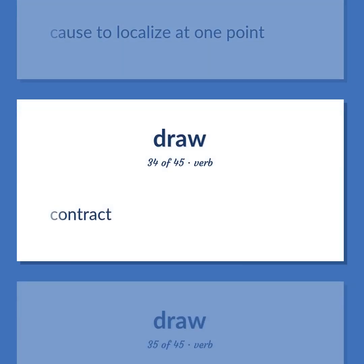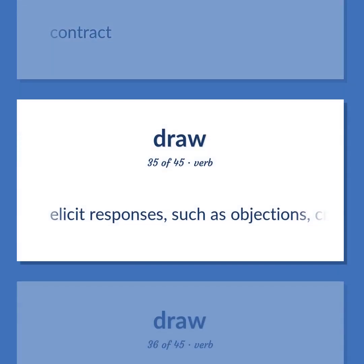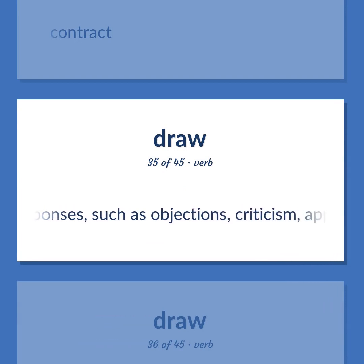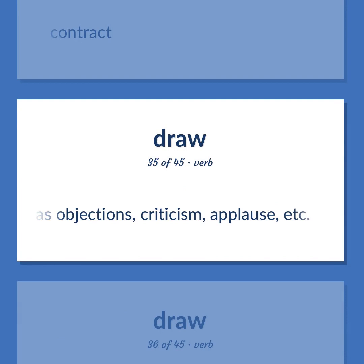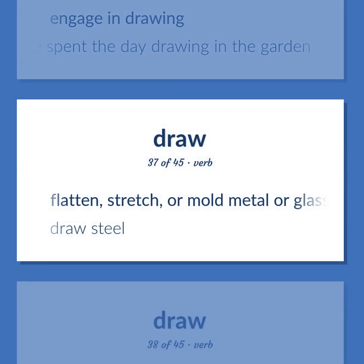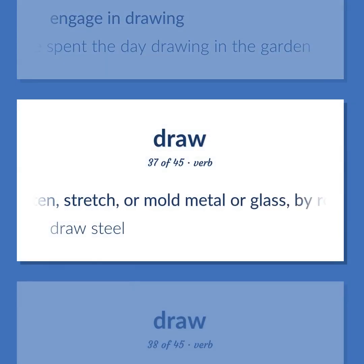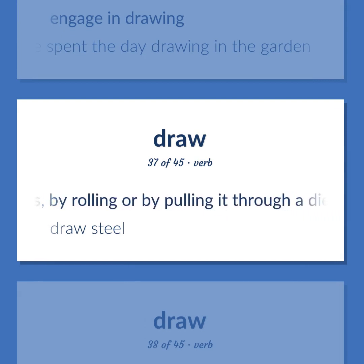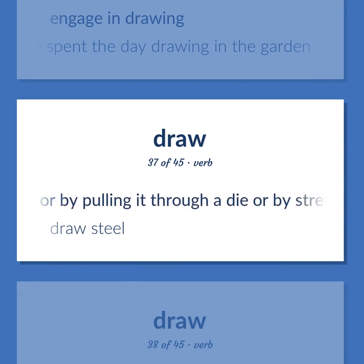Cause to flow. Cause to localize at one point. Contract. Elicit responses, such as objections, criticism, applause, etc. Engage in drawing. He spent the day drawing in the garden. Flatten, stretch, or mold metal or glass by rolling or by pulling it through a die or by stretching. Draw steel.